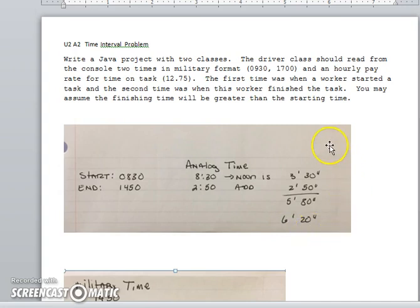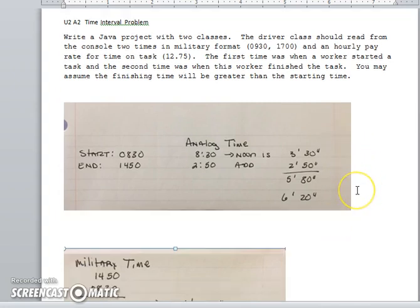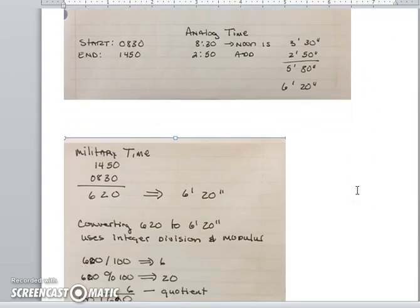So this is how our thinking would go with analog time. If we consider military time, it actually becomes easier because you can just subtract: 14:50 minus 8:30, the ending time minus the starting time, and you end up with 6:20, which is our 6 hours 20 minutes.